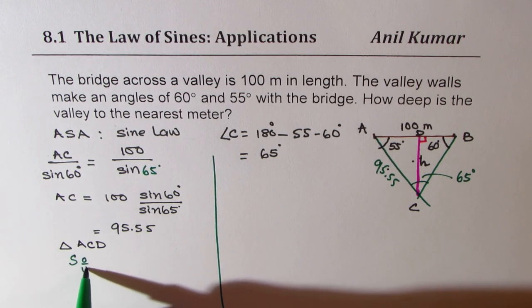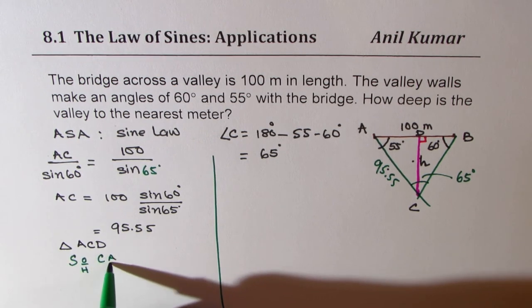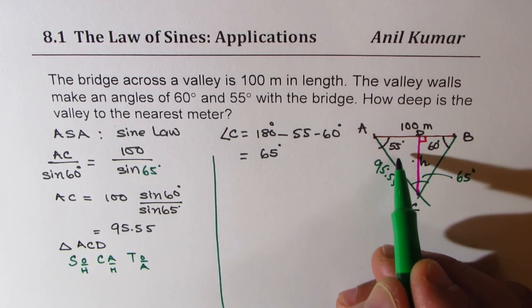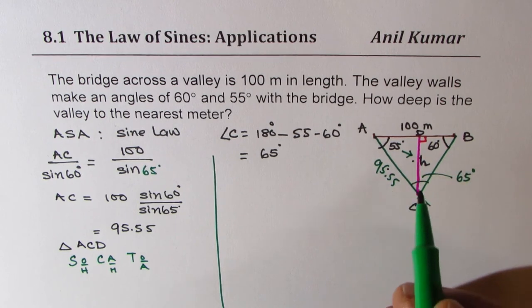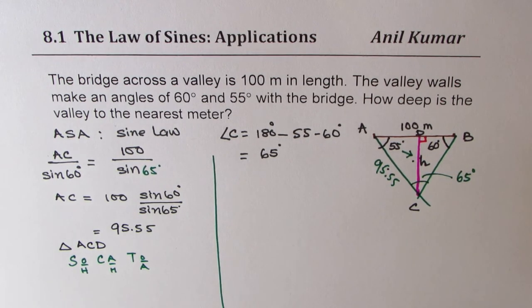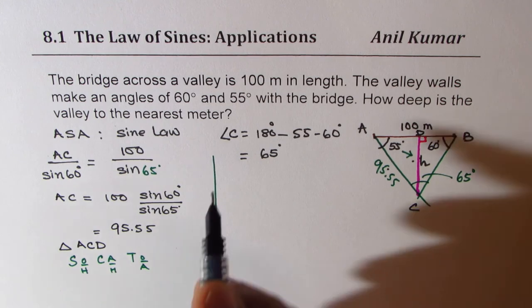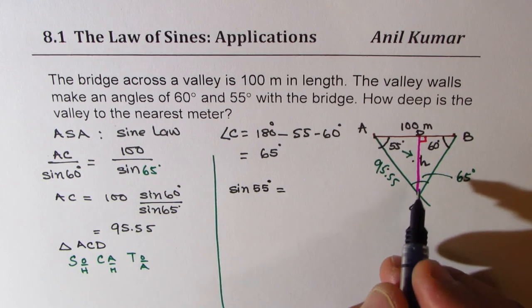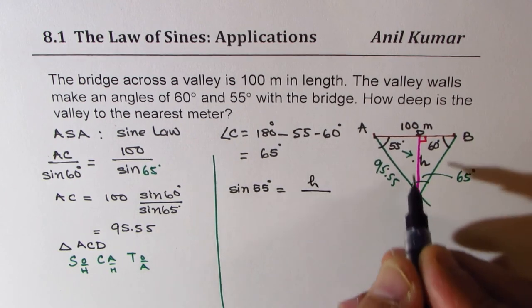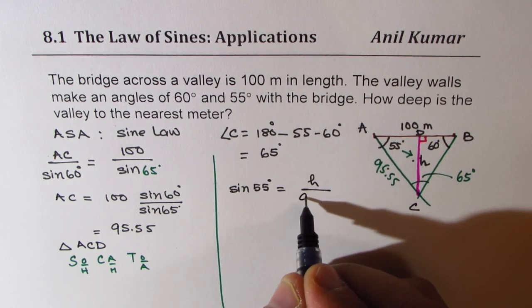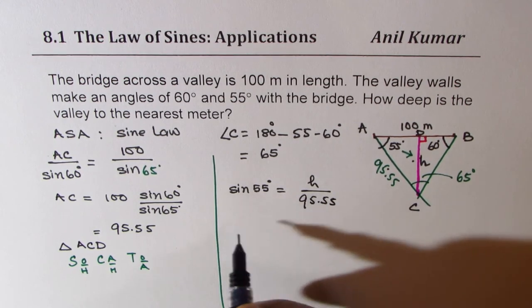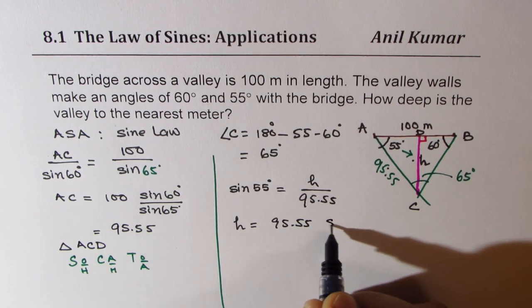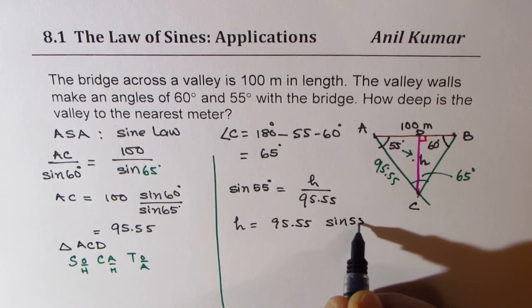In this triangle, we'll use sine ratio. Sine is opposite over hypotenuse. Cosine is adjacent over hypotenuse. And tan is opposite over adjacent. Since we know from 55, this is opposite side and that's the hypotenuse, we'll use the sine ratio. So we get sine 55 equals height divided by 95.55. So h equals 95.55 times sine of 55 degrees.